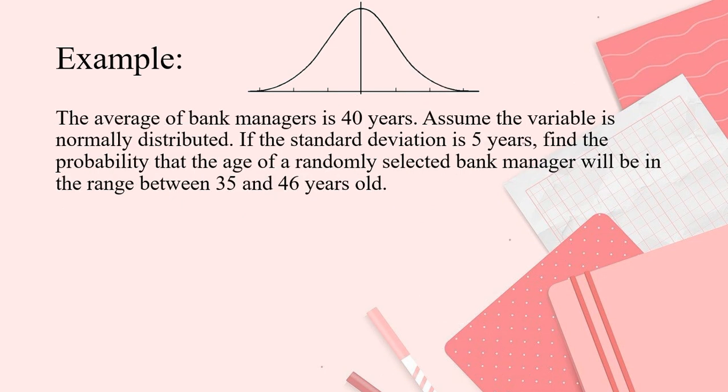Next. Next. So, next example, the average of bank managers is 40 years. Assume that variable is normally distributed. If the standard deviation is 5 years, find the probability that the age of a randomly selected bank manager will be in the range between 35 and 46 years old. So, our given is average age 40. So, that will be the mean. Next, SD 5, given also.